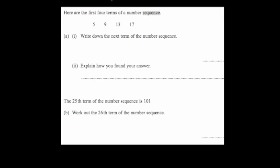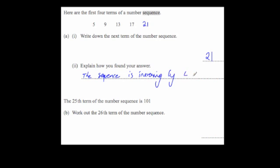Next question: the first four terms of a number sequence are 5, 9, 13, 17. Write the next term. What's happening in the sequence? We're adding 4 each time. So adding 4 to 17 gives 21 — the next number is 21. The reason: the sequence is increasing by 4 each time, and 17 plus 4 equals 21.